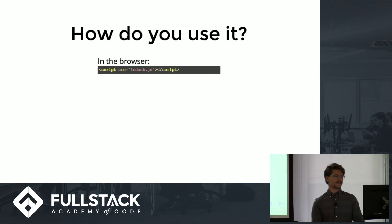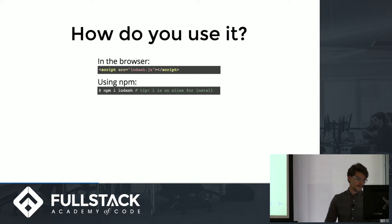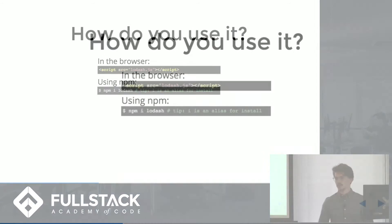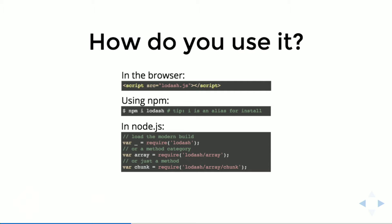So how do you use it? You can use it on the front end — you just include it in a basic script source tag. You can use NPM, you just install lodash, globally or locally, it doesn't matter. On the back end when you require it, you can require the entire library, or if you know you're only going to use one subset, you can require just that method category or even a single method. So if you're only using forEach for arrays, you can include just that one thing — it's very lightweight and not going to slow down any of your loading.